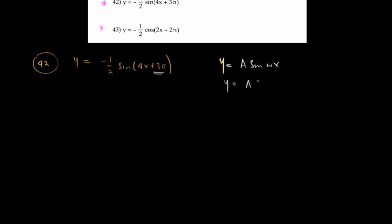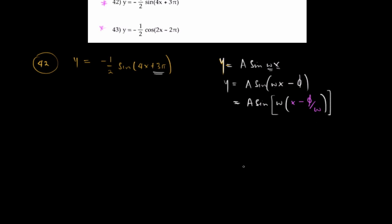That general form is y equals a sine of omega x minus phi, which is the same thing as y equals a sine of omega times (x minus phi over omega). When you expand, omega times phi over omega gives back phi, so it is the same thing. This is the general formula of a sine function taking into consideration every constraint it might have.